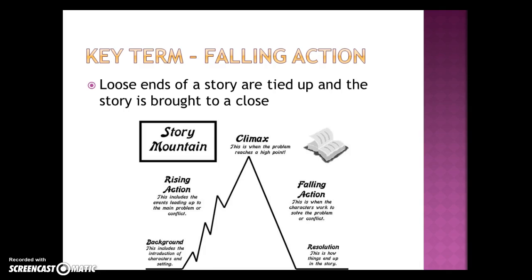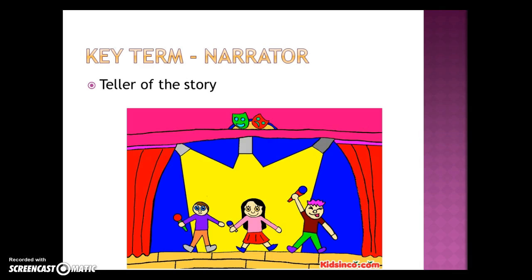Falling action is the loose ends of a story that are tied up, and the story is then brought to a close. The narrator helps tell the story, filling in the parts that the dialogue or the characters are not given during the script. So the narrator kind of fills in the gaps.